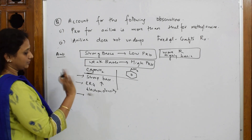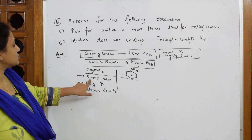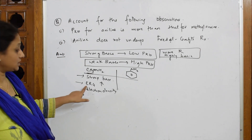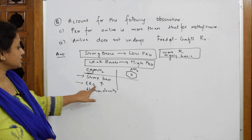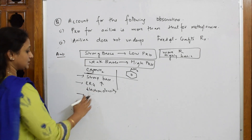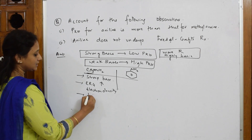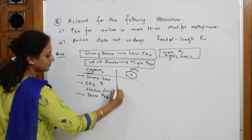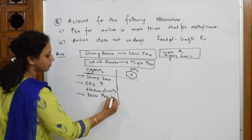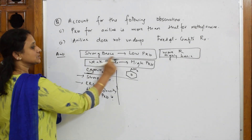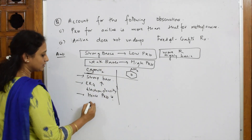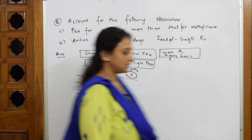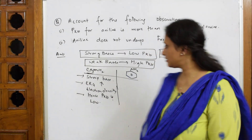Strong base — why? Because the electron-releasing group increases electron density. Hence pKb will be low. For strong bases, pKb will be low. That is the simple concept here.